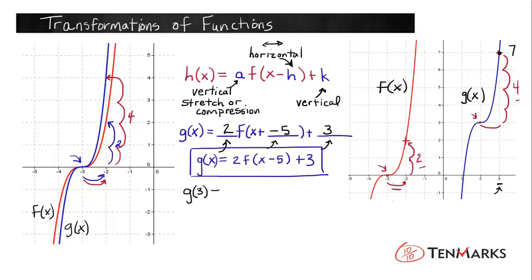So we'll say g of 3 equals 2 times f of 3 minus 5 plus 3, and that will give 2 f of negative 2, 3 minus 5 is negative 2, plus 3. And to get f of negative 2, we don't have an equation to use, but we have a graph. So we'll go to f of negative 2, which is right here, and see what the y value is. And the y value at f of negative 2 is positive 2, getting that from right here. So this f of negative 2 equals 2, and then we'll bring down this 2 and our plus 3. And we're going to get 2 times 2 is 4, plus 3 is 7. So g of 3 gave us a 7, and sure enough, g of 3 is 7.